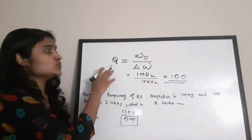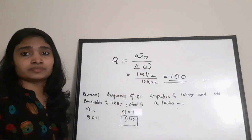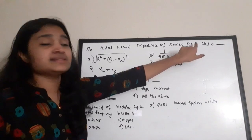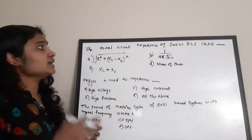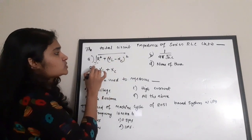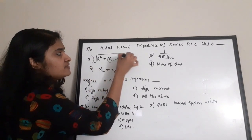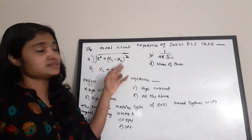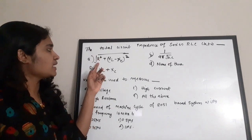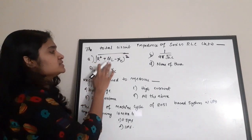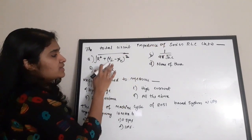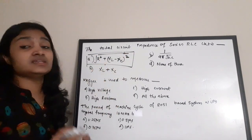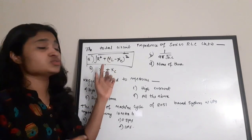The total circuit impedance of a series RLC circuit — a series RLC circuit consists of resistance, inductance, and capacitance. The impedance Z = √(R² + (XL − XC)²). For the resistive element there is no imaginary term; for L and C we take the reactance. So Z = √(R² + (XL − XC)²) is the total circuit impedance for a series RLC circuit. This equation is very important. Correct answer is option A.